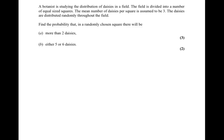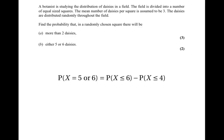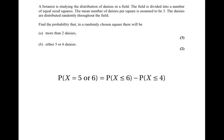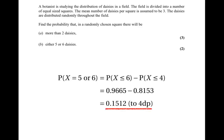Next we have to find the probability of getting either five or six daisies. P(X = 5 or 6) equals P(X ≤ 6) minus P(X ≤ 4). Looking up the tables for lambda equals 3, we find P(X ≤ 6) = 0.9665 and P(X ≤ 4) = 0.8153. So the answer is 0.9665 minus 0.8153, which gives 0.1512 to four decimal places.